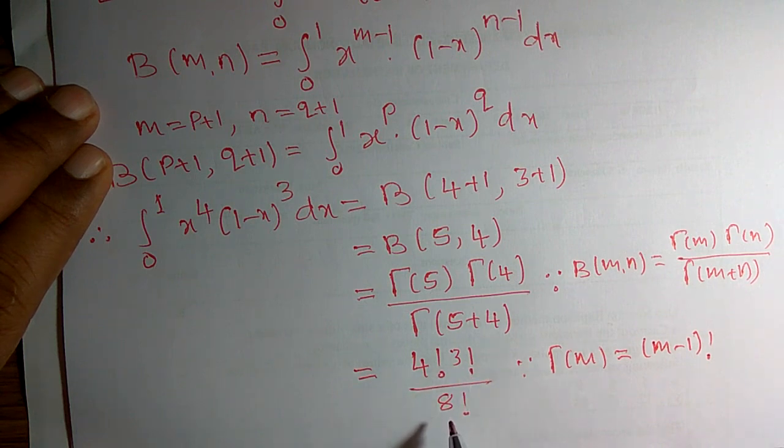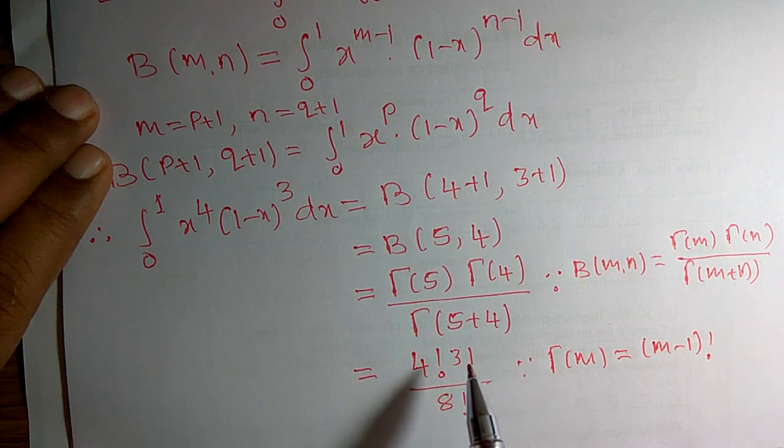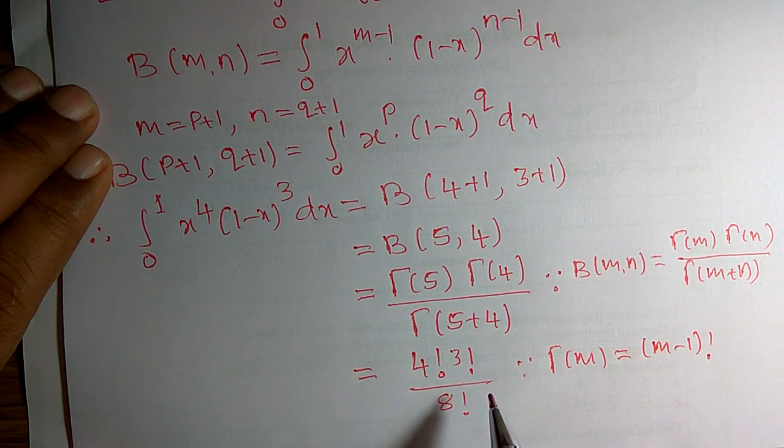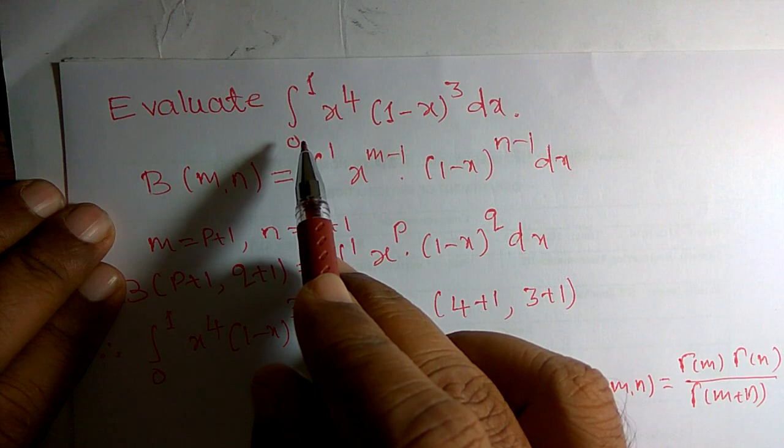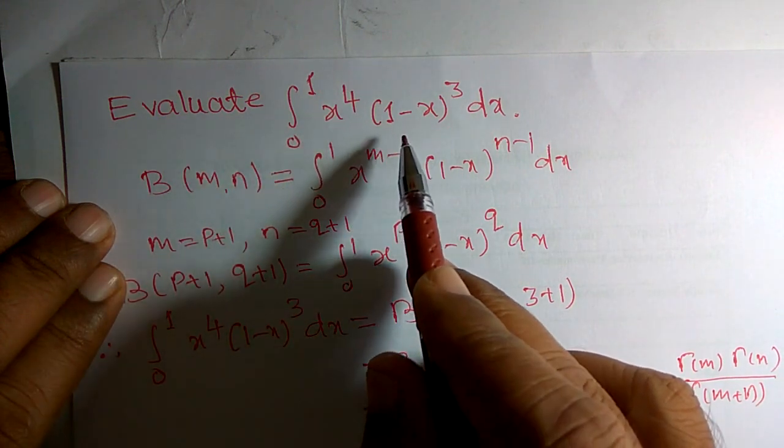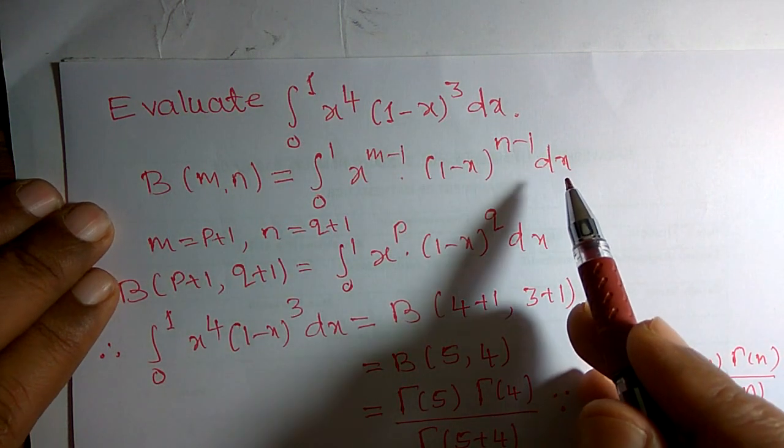Exactly in a similar way, 8 factorial can be written as 8 into 7 and so on up to 1. Finally, we can simplify. Like that, we can find out the value of the integral 0 to 1, x raised to 4 into 1 minus x to the power 3 dx.